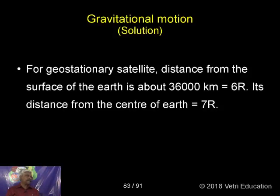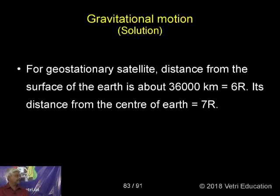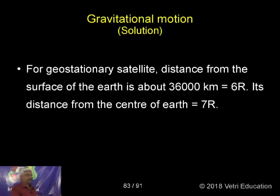For a geostationary satellite, the distance from the surface of the Earth is about 36,000 km, which is equal to approximately 6R, because 6,400 multiplied by 6 gives that value. The distance from the center of the Earth is 36,000 km plus the radius of the Earth R, giving the total distance as 6R plus R.